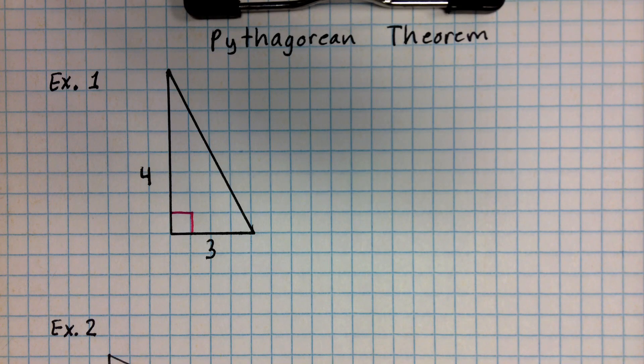In this video, I'm going to show you how to use the Pythagorean Theorem in order to solve for a missing side of a right triangle.